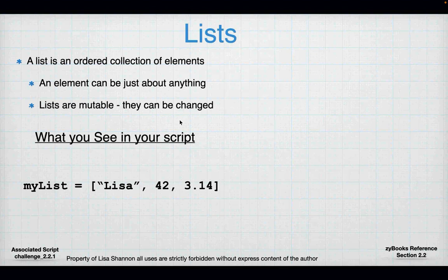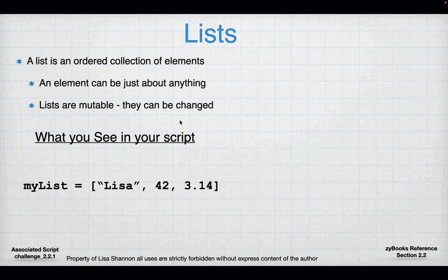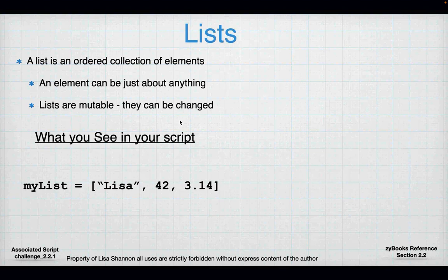So what you see in your script — my_list. We know my_list is a variable because it is on the left-hand side of a single equal sign. On the right-hand side we have some new syntax: an open square bracket, a string called Lisa, the number 42, the number 3.14, and a closed square bracket. The open and closed square bracket, when you're defining a variable, is telling Python there's a list. That list might be empty or populated, but it's going to be a list.